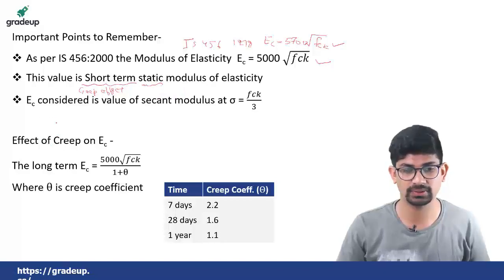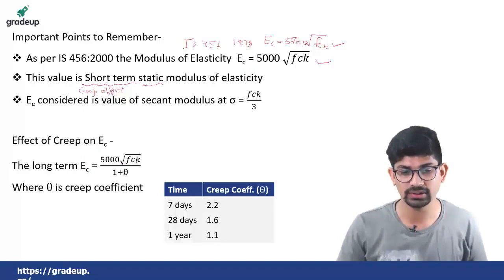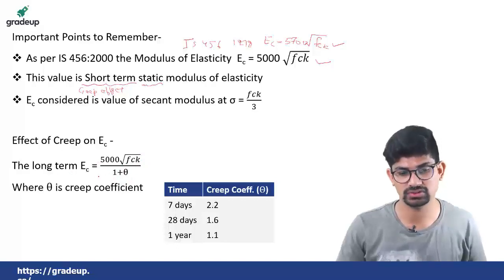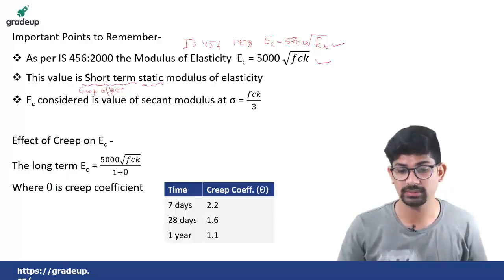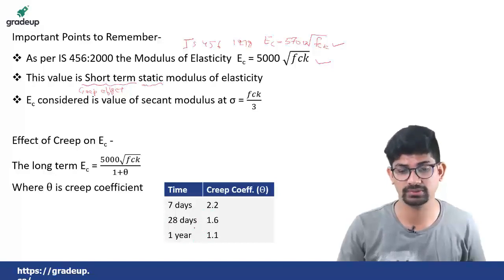As already mentioned, this value of EC does not consider creep. If we take the effect of creep, then the long-term modulus of elasticity EC becomes 5000 times root fck divided by (1 plus theta). The factor 1 plus theta converts the short-term static modulus to the long-term modulus. Theta here is the creep coefficient. As per IS 456, the creep coefficient for 7-day loading is 2.2, for 28 days it is 1.6, and for 1 year it is 1.1.